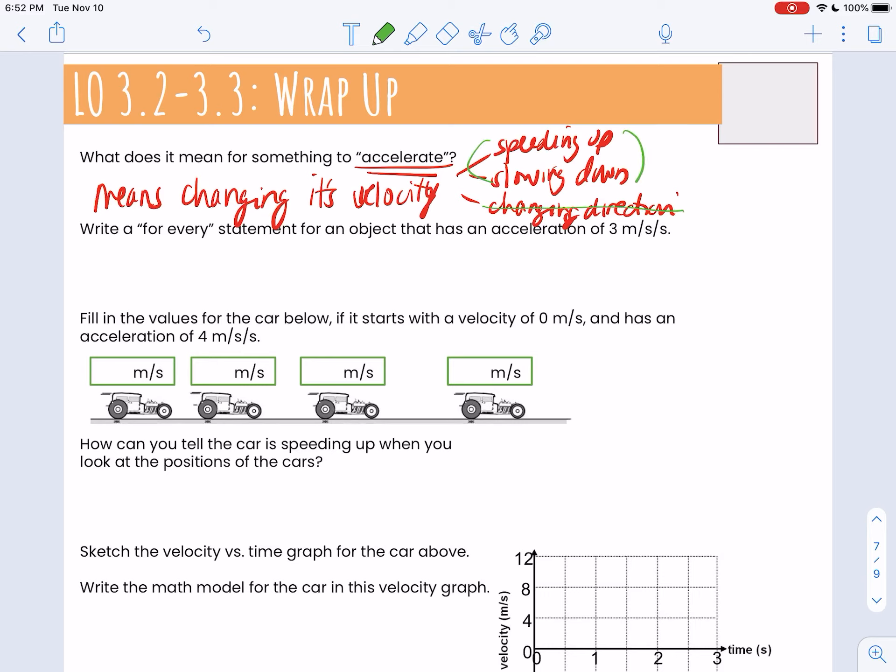But we will deal with speeding up and slowing down. So anytime something's speeding up or slowing down, we say it is accelerating. We do not say this D word, decelerating. Don't say this. Why? It's complicated. We probably won't get to it, but don't say it. It's accelerating if it is changing its velocity. That's what it means.